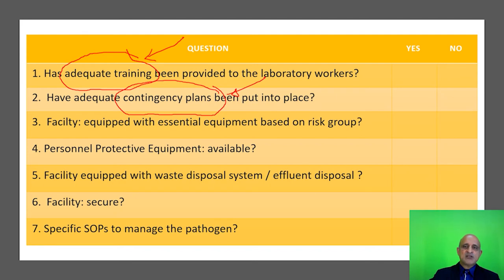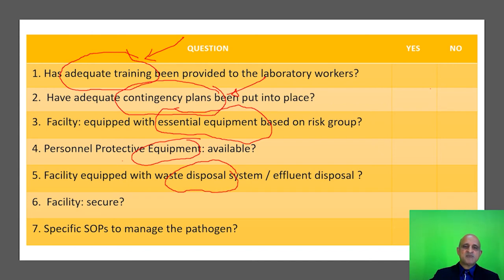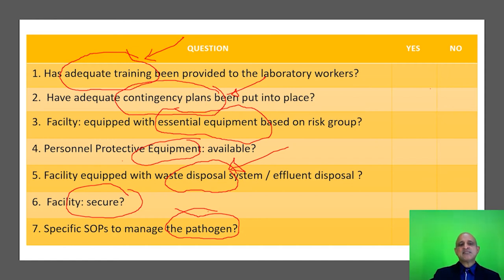The facility questions pertain to the essential equipment based on the risk group. One of the essential items, which I have discussed earlier, is the biological safety cabinet. Also assessed are the availability of personal protective equipment, the availability of a waste disposal system to prevent release of the biological agent into the environment or breach of secondary containment, the security of the facility, and specific SOPs related to managing the pathogen. Most of these questions pertain to processes within the facility itself and the specific controls. One must conduct this kind of risk assessment prior to moving on to risk mitigation.